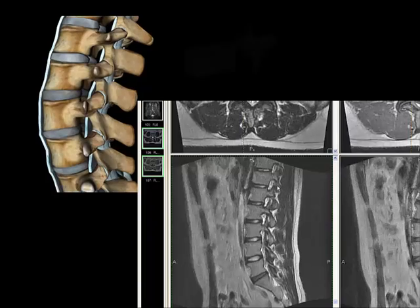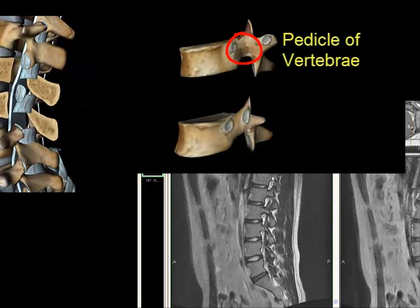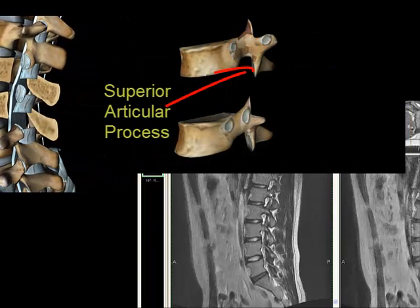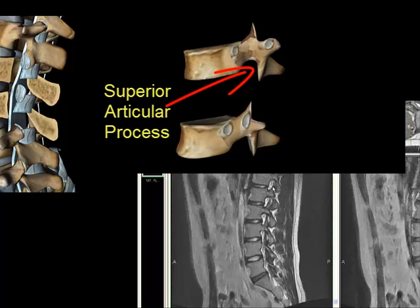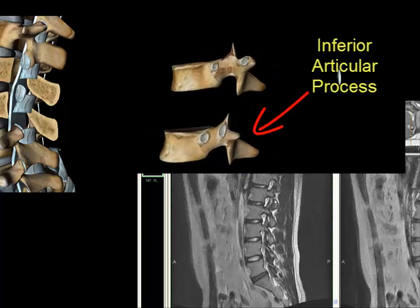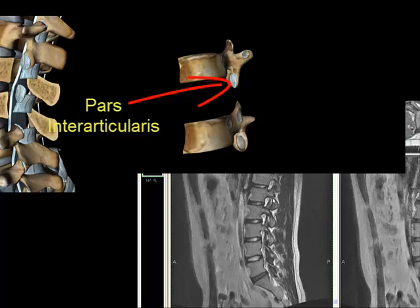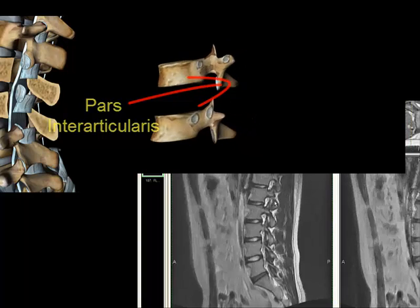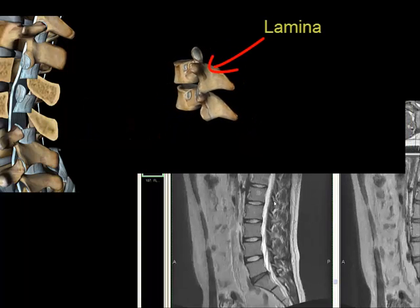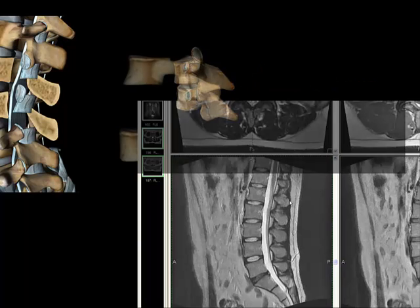As we make our way posterior, you can see the pedicle of the bone here, and then the superior articular process and inferior articular process. In between is the pars interarticularis. And if I go more to the midline, you can see the lamina here, and then here's the spinous process.